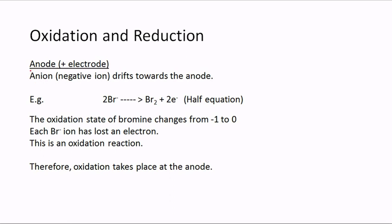The anode is the positive electrode; the anions drift towards it. For example, if we have bromide ions (Br⁻) in solution, at the anode the Br⁻ ions produce bromine: 2Br⁻ → Br₂ + 2e⁻. This equation is called a half-equation for electrolysis.